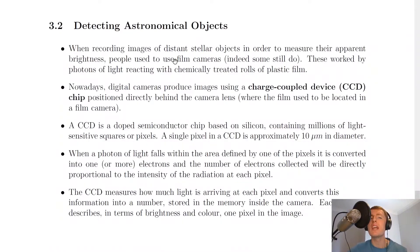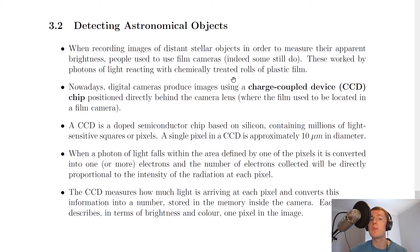When recording images of distant stellar objects in order to measure their apparent brightness, people used to use film cameras. Indeed, some still do. These worked by photons of light reacting with chemically treated rolls of plastic film.